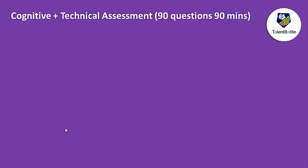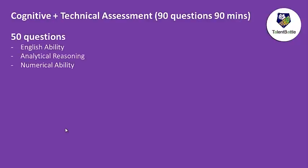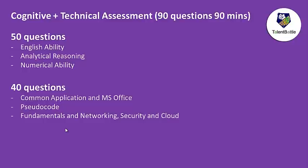The Cognitive and Technical Assessment will have 90 questions in 90 minutes. Out of those, 50 questions will be based on English ability, analytical reasoning, and numerical ability — essentially aptitude. The remaining 40 questions will be the technical assessment, covering common applications, MS Office, pseudocode questions, and fundamentals of networking, security, and cloud.